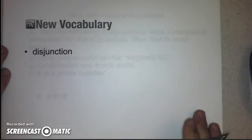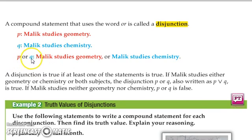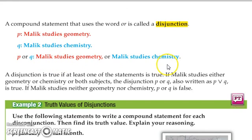That leads us to our next vocabulary word: disjunction. A disjunction is a compound statement that uses the word 'or.' A disjunction is true if at least one of the statements is true. If P is true and Q is not, the 'or' statement is still true. If P is false but Q is true, it's still true. If both are true, the disjunction is true. The only way for a disjunction to be false is if both parts are false.